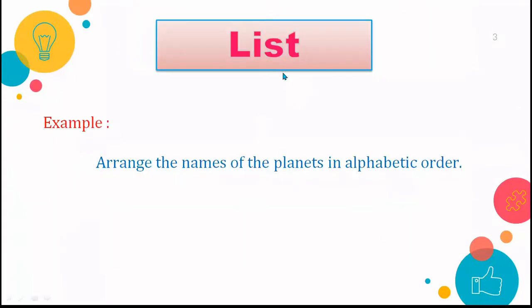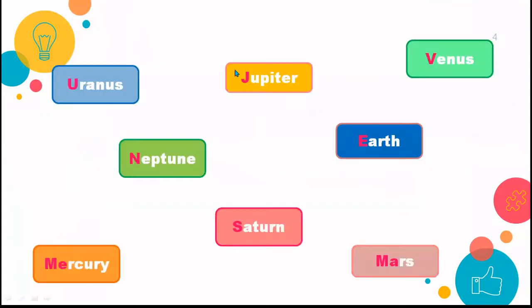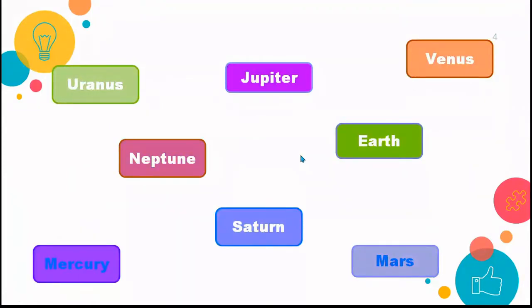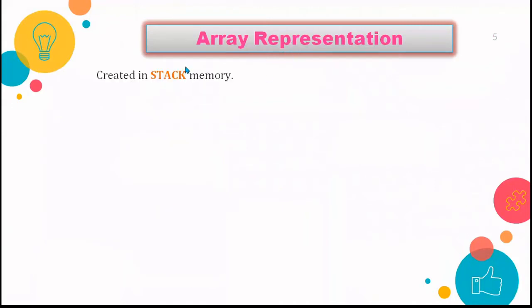Let's understand this with the help of an example where we have some planets of the solar system that we need to arrange in ascending order from A to Z. In case of array representation, the array is basically stored in stack memory and addresses in the array are in contiguous locations.